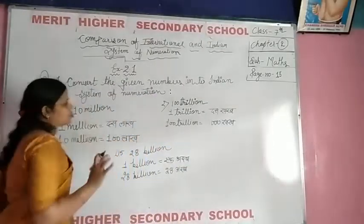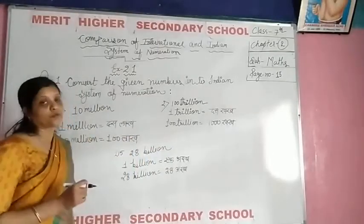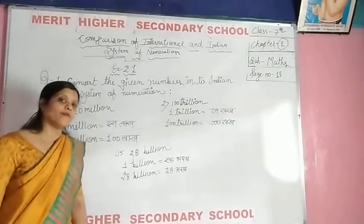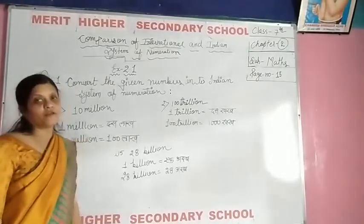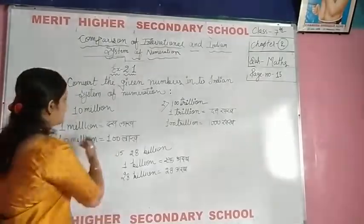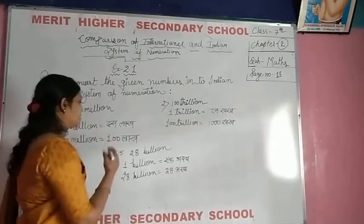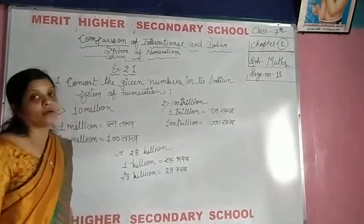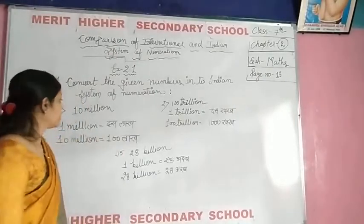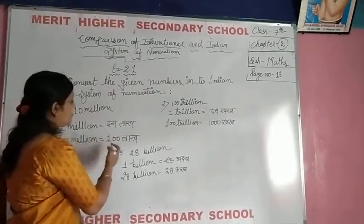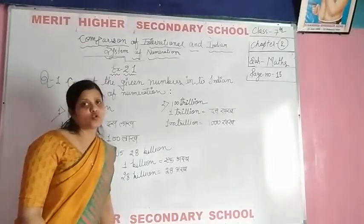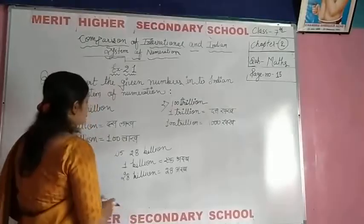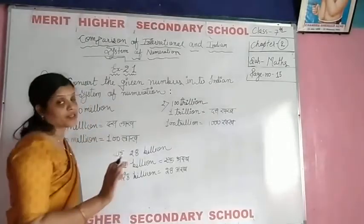When you get a question like 10 million, 20 million, 30 million, you need to first find 1 million. So if 1 million equals 10 lakh, then 10 million equals 1 crore. If it is 20 million, then you can find it similarly. If 1 million is known, then 2 million can also be found.